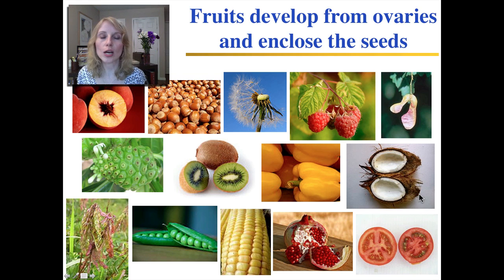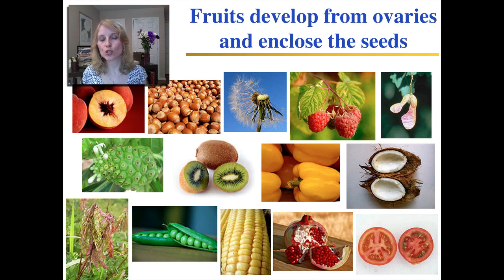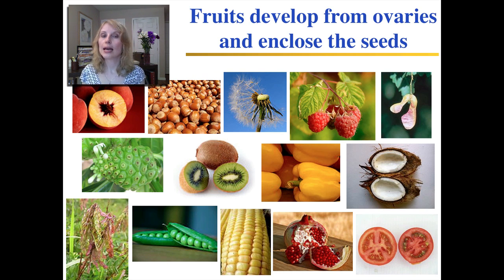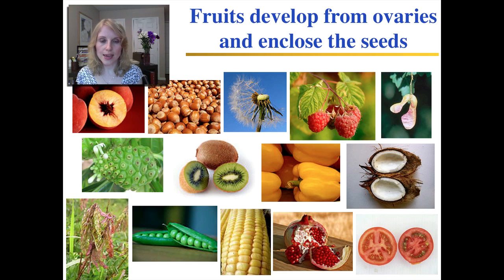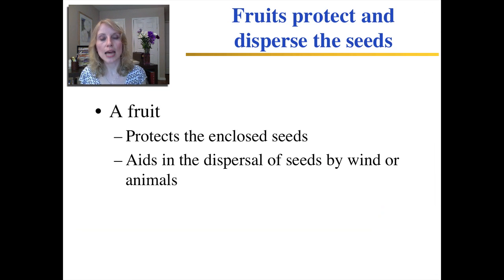There are all kinds of shapes and sizes of fruits. Anything that develops from an ovary is a fruit — that includes pea pods, zucchini, string beans, and eggplant. Their job is to protect the enclosed seeds and to aid in their dispersal.